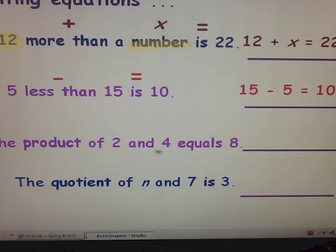The product of 2 and 4 equals 8. Here, our equal sign, the clue word is equals. And our other clue word is product. Product tells us to multiply. What are we multiplying? The 2 and the 4. So 2 times 4 equals 8. That would be our equation.